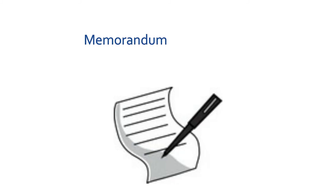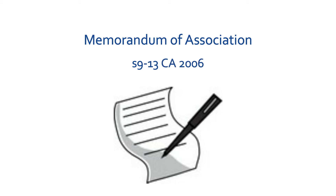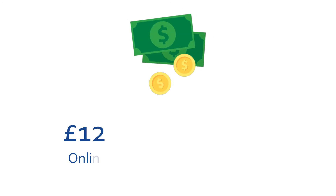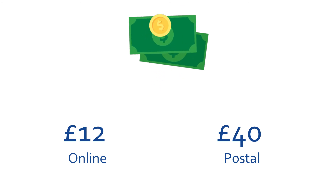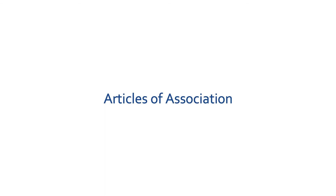The members of the company must sign their names to a memorandum of association, which is referenced in sections 9 to 13 of the Companies Act 2006. This is a simple document that states share limits and other details about the company. Additionally, a fee of £12 must be paid to incorporate the company if you choose to do this process through the post.